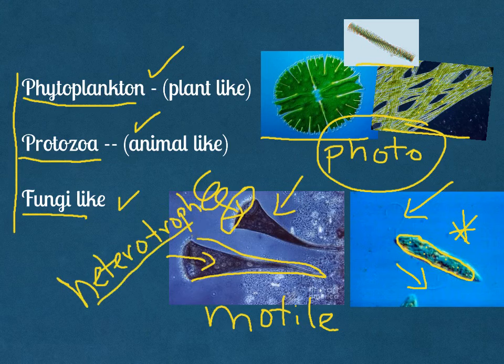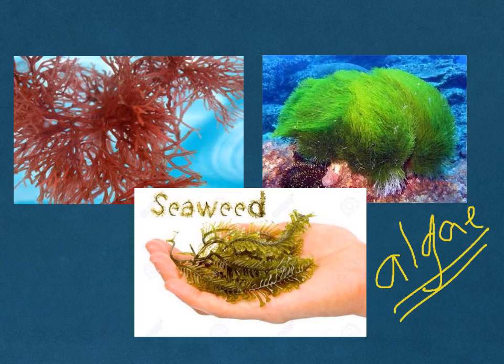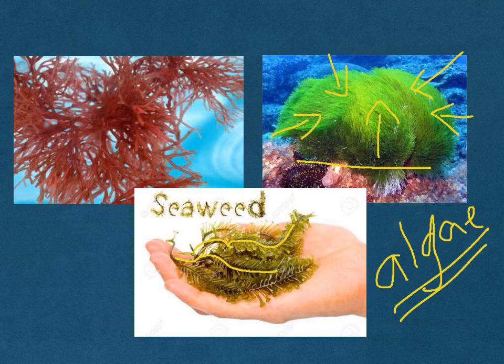Besides microscopic protists, we can find macroscopic protists that we can see with the naked eye — these are generally called algae. Why is an algae not a plant? Because algae do not have internal structures for absorbing nutrients from the ground; they don't have specialized tubes for moving nutrients from bottom to top. They absorb nutrients directly from their surroundings. Also, they can be fully submerged in water, while an actual plant would rot from excess water. That's why we classify algae in protist kingdom, not plant kingdom.